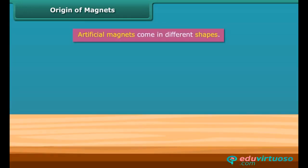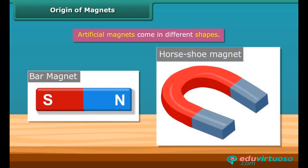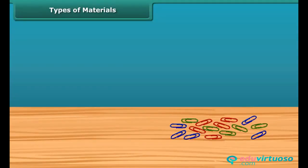Artificial magnets come in different shapes. For example, bar magnet, horseshoe magnet, etc.